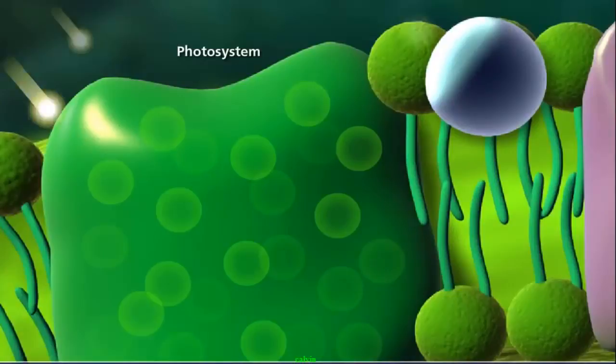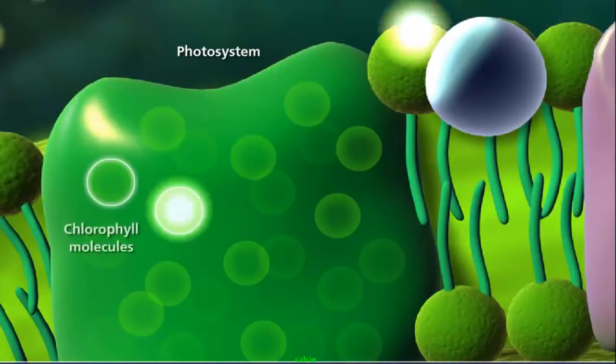The photosystems of the thylakoid consist of a network of accessory pigment molecules and chlorophyll, the molecules that absorb the photon.